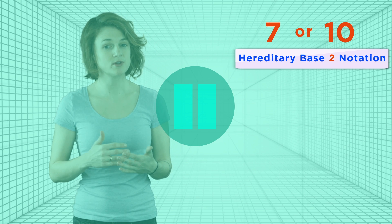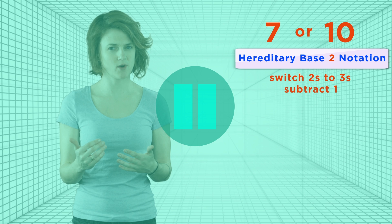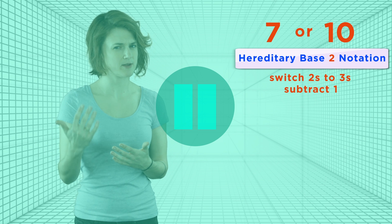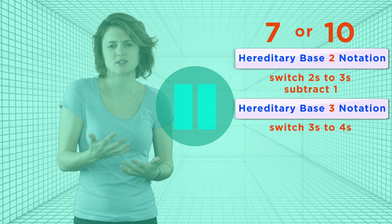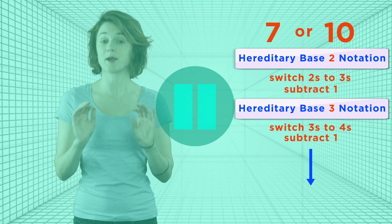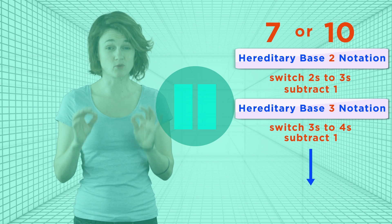Write in hereditary base 2, switch 2's to 3's, subtract 1. Then write the result in hereditary base 3, switch 3's to 4's, and subtract 1, and so on. I promise, your sequence will get really big, really fast. How fast?